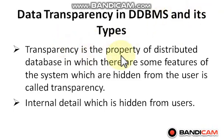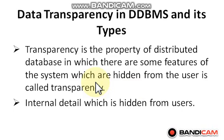Transparency is the property of a distributed database in which some features of the system are hidden from the user — this is called transparency. Distributed database has a property where its features and internal details are hidden from the user. It is called transparency.